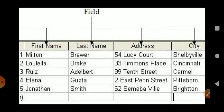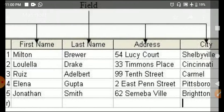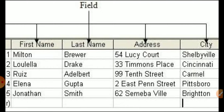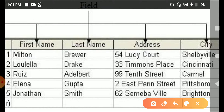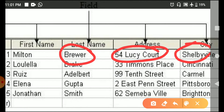Looking at the next slide, there are a few columns: first name, last name, address, and city. Each one independently represents a field — first name is one field, last name is the second field, address is the third field, and city is the fourth field. For example, 'Milton' independently would be represented as a field.